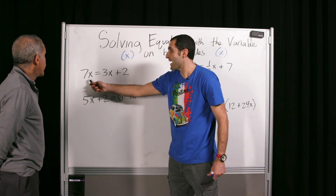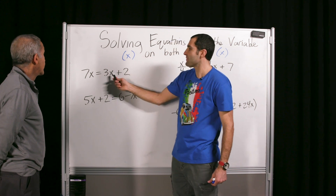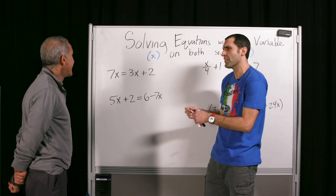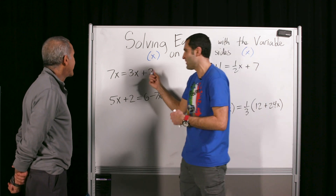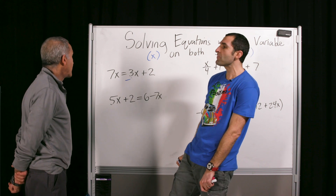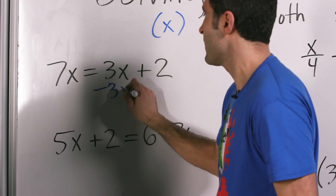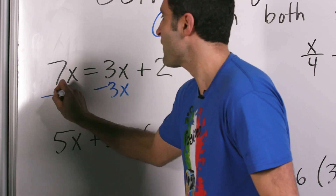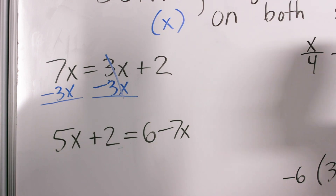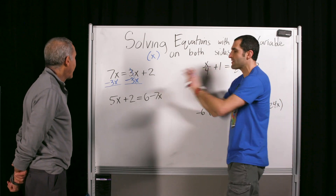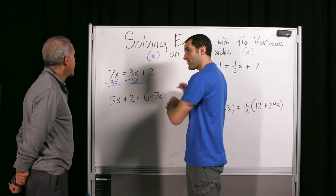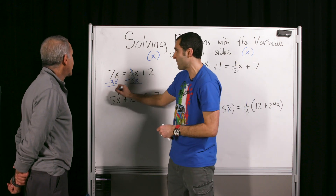I could ask you: seven times what equals three times that number plus two? Or we could solve. I think we're in the mood for solving. So let's just attack the thing. What do you do to both sides to get x by itself?